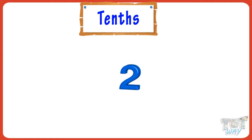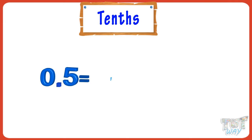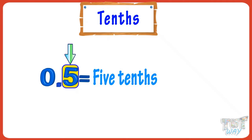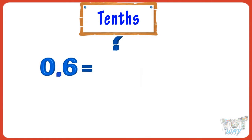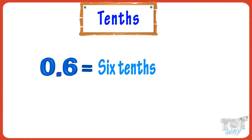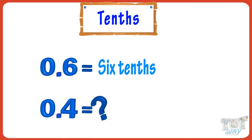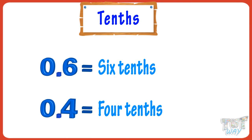Kids! Tenths have one digit after the decimal point. Like 0.5 is 5 tenths, as there is only one digit to the right of the decimal point. So it is tenths place, and we name it as 5 tenths. Here we have another decimal number and we will name it as 6 tenths. Here is one more — we will name it as 4 tenths.